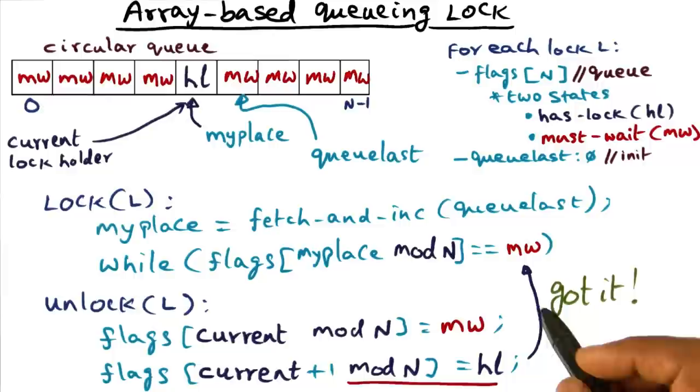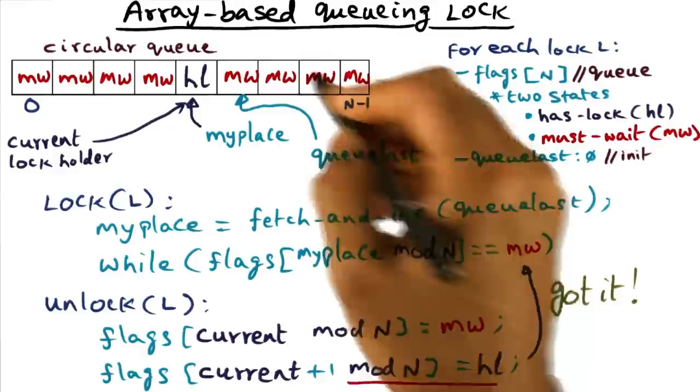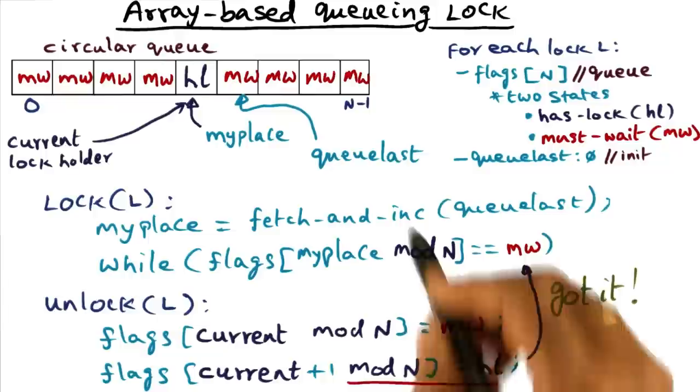And this we saw where the deficiency of the ticket lock algorithm was exactly that, that it is fair but it is noisy when the lock is released. So that problem has gotten away with this queuing lock.